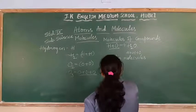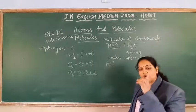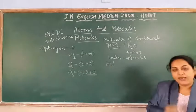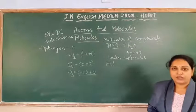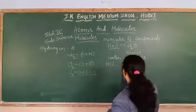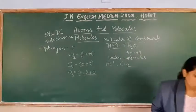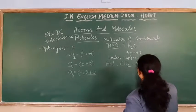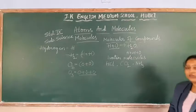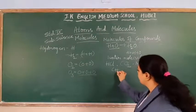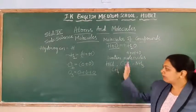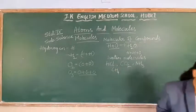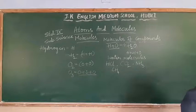These compounds are formed by a group of atoms, called molecules, and these are called molecules of a compound. For example, hydrochloric acid — HCl — is one molecule of a compound. HCl is one compound made up of different types of atoms. Carbon dioxide — molecule of carbon dioxide. Ammonia — molecule of ammonia — NH3. Molecule of methane — CH4. These are compounds with their molecules, groups of atoms, and these are called molecules of compounds. Take down the examples, students.